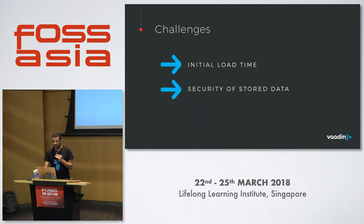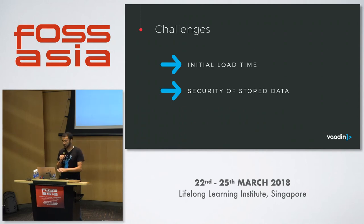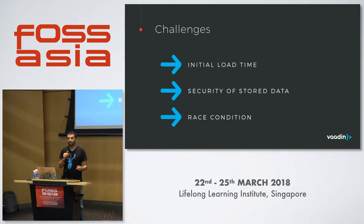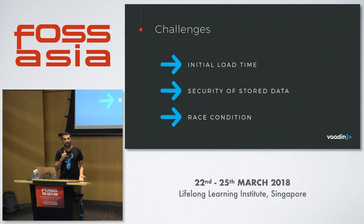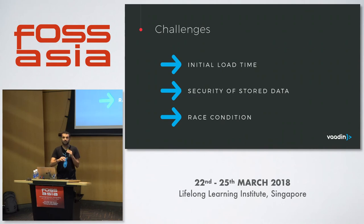The second challenge is the security of stored data. You're exposing database-level data and storing it inside the browser, which needs to be handled in terms of authentication, wiping the data on logout, and so on. Finally, the race condition — in real applications, multiple users may modify data offline, and when they reconnect online, you'll have a race condition. Luckily PouchDB provides something called best-guess merge, or you can fall back to asking the user what to do, or implement your own merging strategy. This happens even in online applications, just more often here.